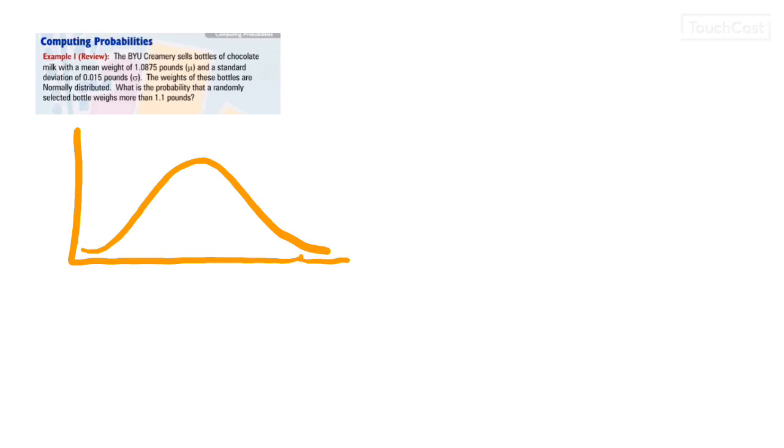So here's our normal distribution, and what we know is that the center here, this center is mu. And mu, in this case, is 1.0875, and the standard deviation on either side here is 0.015.